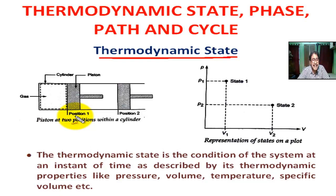At position 1 of the piston, at any instant, the condition of the system can be described by PV diagram. This is state 1, it is described as pressure P1, volume V1 and temperature T1.